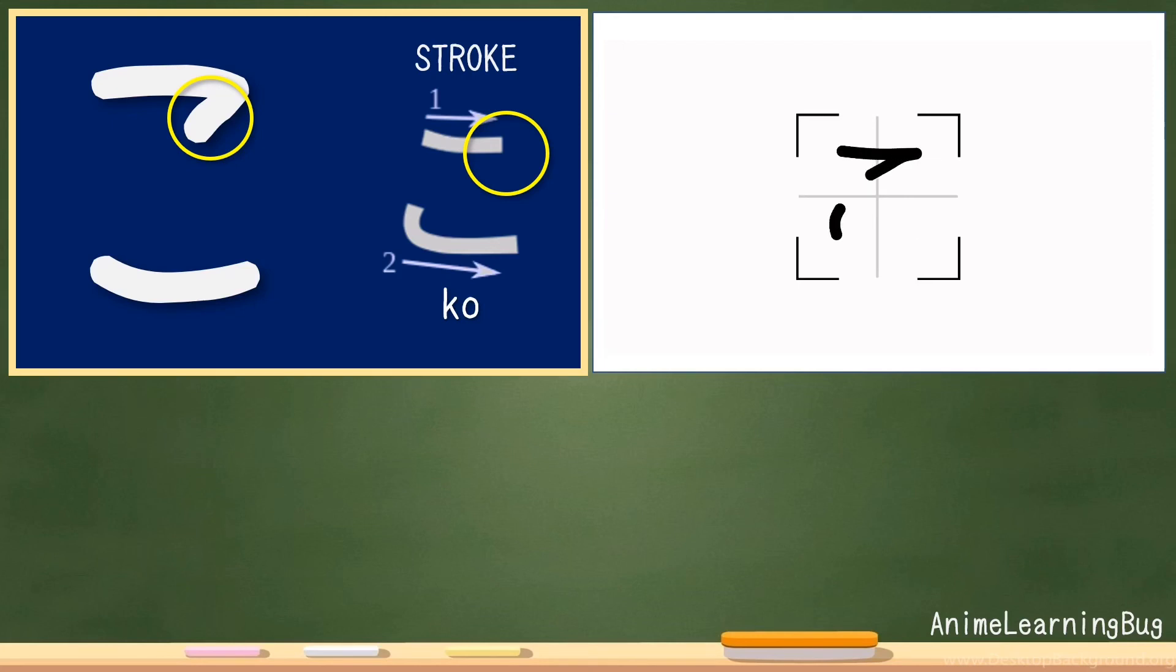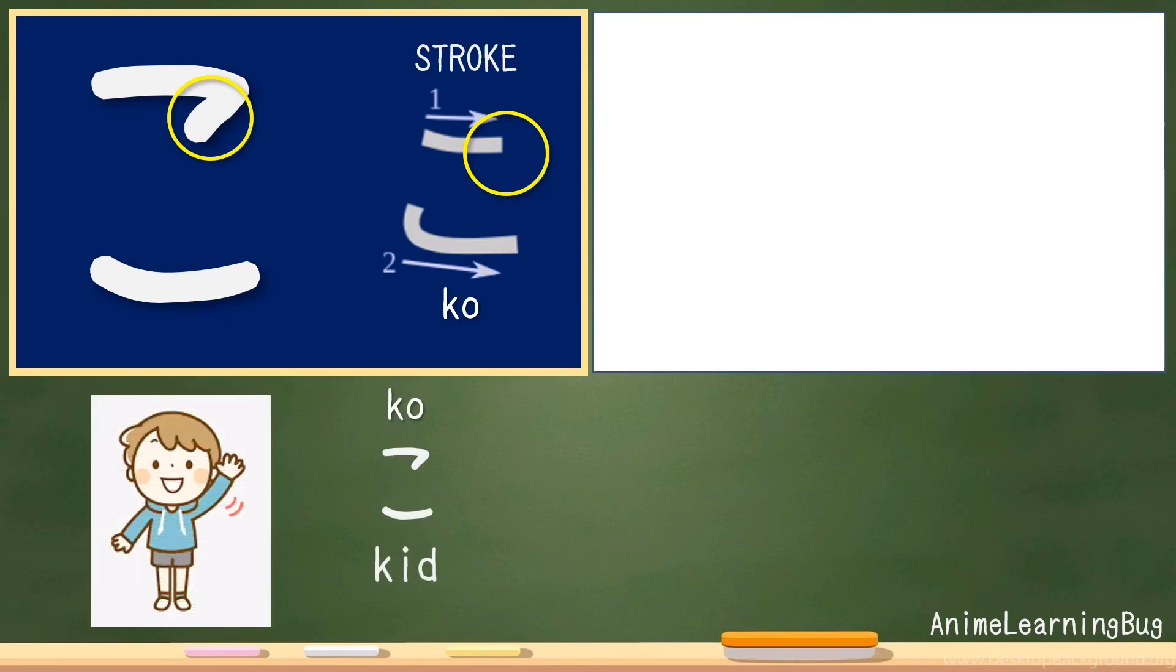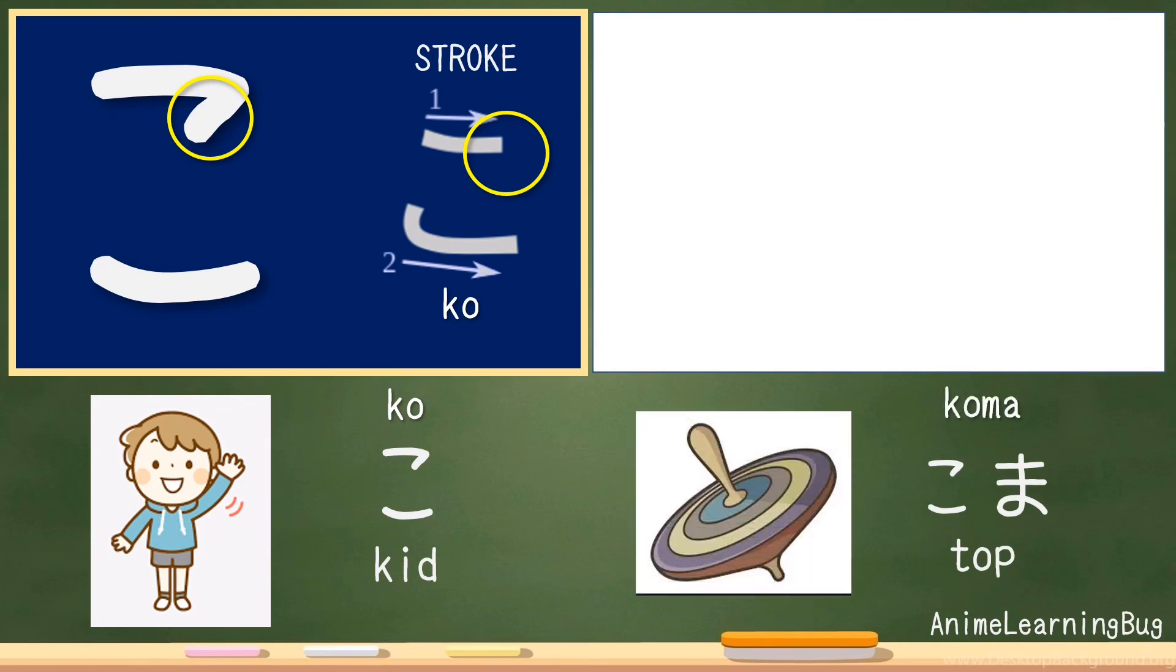Wasn't that easy? So for examples, we have here ko, which already means kid, and koma, which means spinning top.